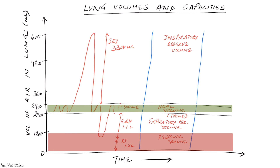Now let's talk about capacities — these are essentially sums of the individual volumes. We have inspiratory capacity, which is the total amount of air we can inspire. It is the sum of inspiratory reserve volume plus tidal volume. Inspiratory capacity is about 3.8 liters in men and about 2.4 liters in women.